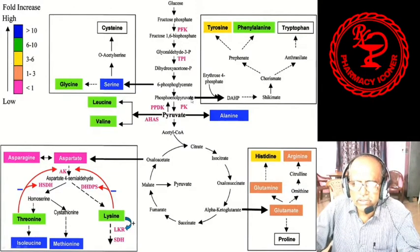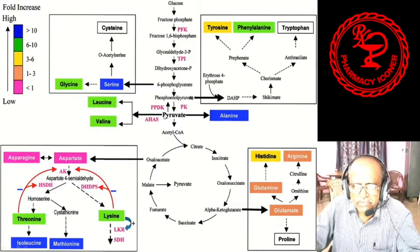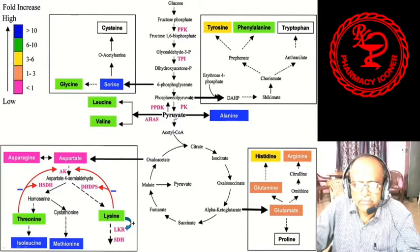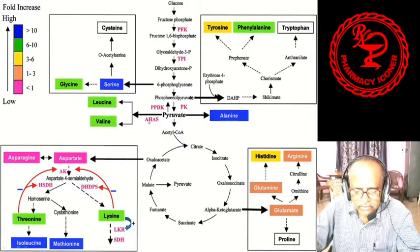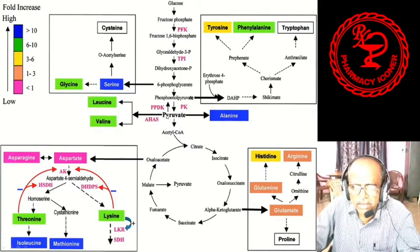From phosphoenolpyruvate, the reaction is reversible: pyruvate is formed with the help of pyruvate kinase, and simultaneously from pyruvate, pyruvate phosphate dikinase converts it back to phosphoenolpyruvate. From pyruvic acid, with the help of acetohydroxy acid synthase, two amino acids are formed — leucine and valine. On the other hand, from pyruvate, alanine is also formed.